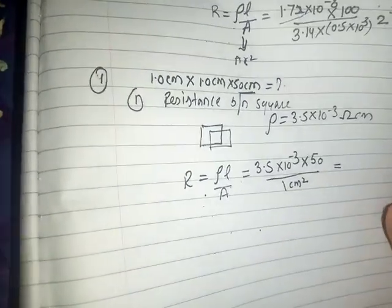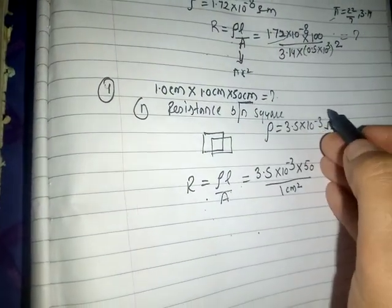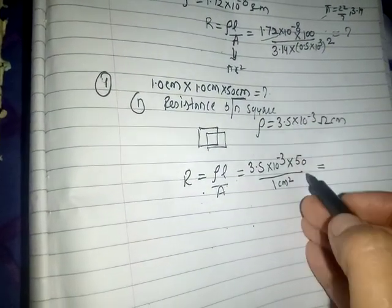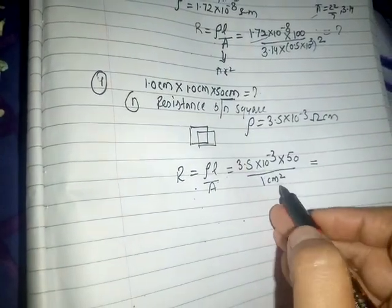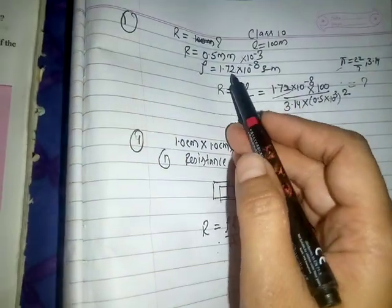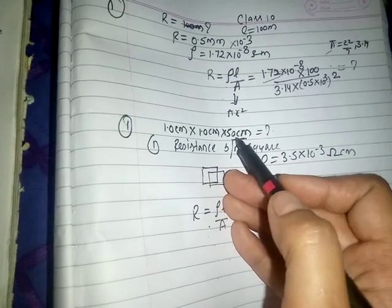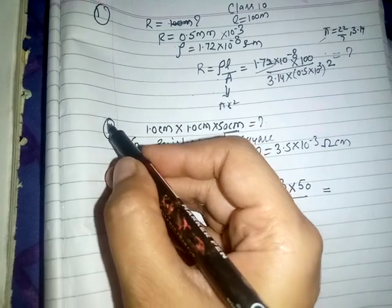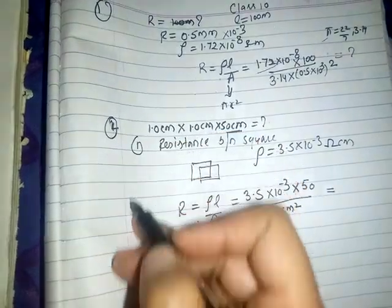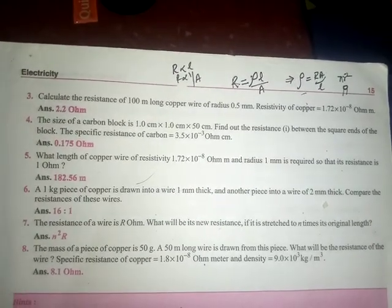Sometimes the wire is not circular in shape. If it is a square or rectangular block, the area is length times breadth, and you also have height. That is how you solve such numericals. Now it's homework time — see these numericals for homework.